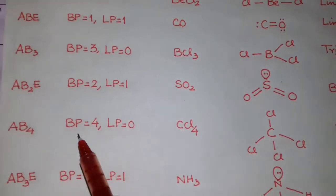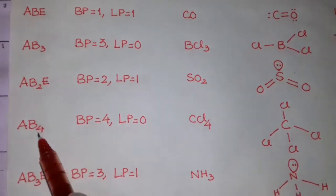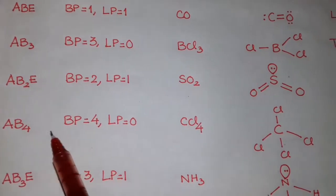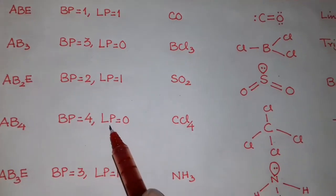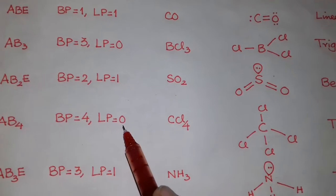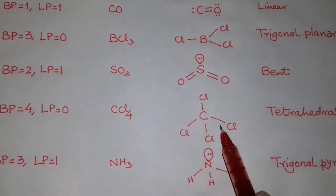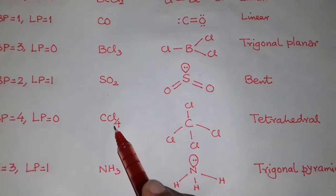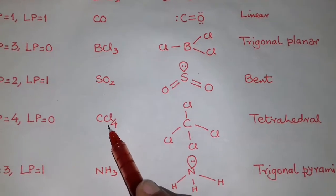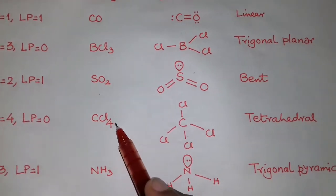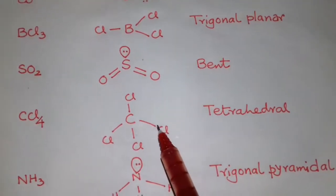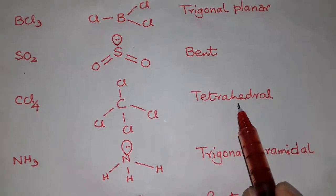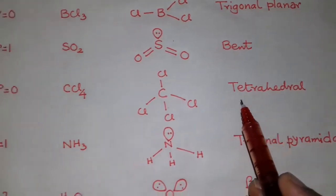Next, for H equals 4, type AB4: bond pair is 4 and lone pair is 0, so the type is tetrahedral. Carbon is the central atom and chlorine atoms are the non-central atoms in this tetrahedral molecule (CCl4).